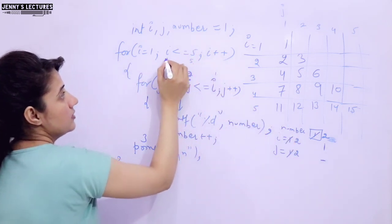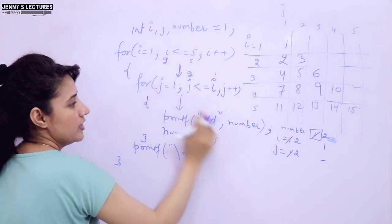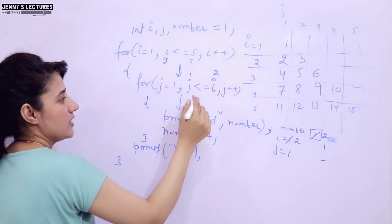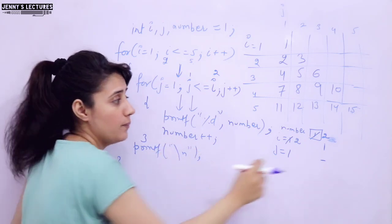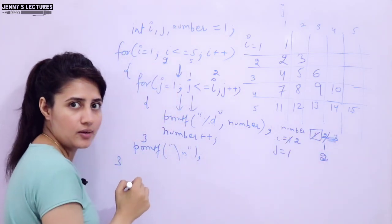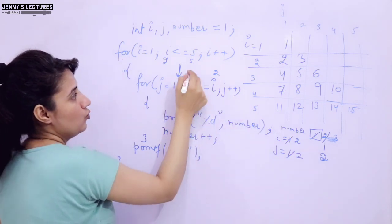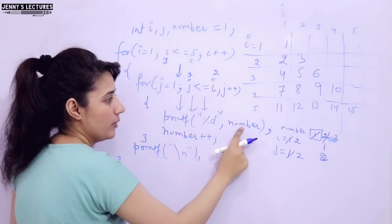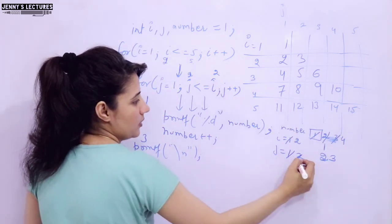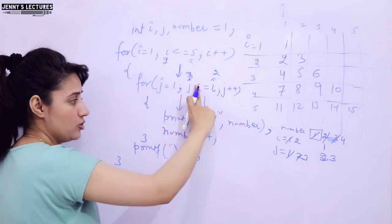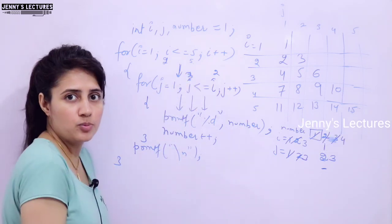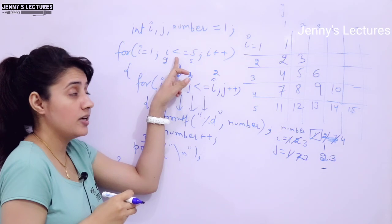I++, now I is 2. Is 2 less than equal to 5? Yes, we enter the loop again. J is initialized to 1. 1 is less than equal to 2, condition true — number (which is 2) is printed. number++ makes number 3. J++ makes J 2. Is 2 less than equal to 2? Yes, enter again — number (3) is printed. number++ makes it 4. J++ makes J 3. Is 3 less than equal to 2? No — exit. Print newline, I++ makes I 3. The condition is still true and this process repeats until the outer loop condition becomes false.